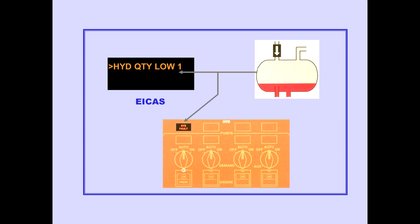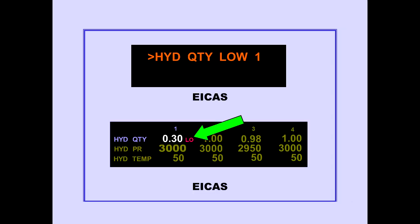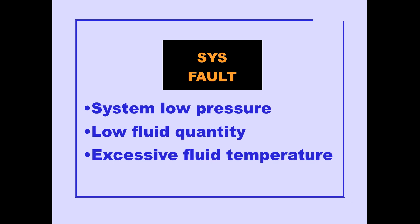The ICAS advisory message, Hydraulic Quantity Low, is displayed when a hydraulic system fluid quantity is low. The system fault light illuminates. When the reservoir quantity is at or below the system low level, the letters LO are displayed next to the quantity on the ICAS status page. Recall that three conditions will cause a system fault light to illuminate: system low pressure, low fluid quantity, or excessive fluid temperature.